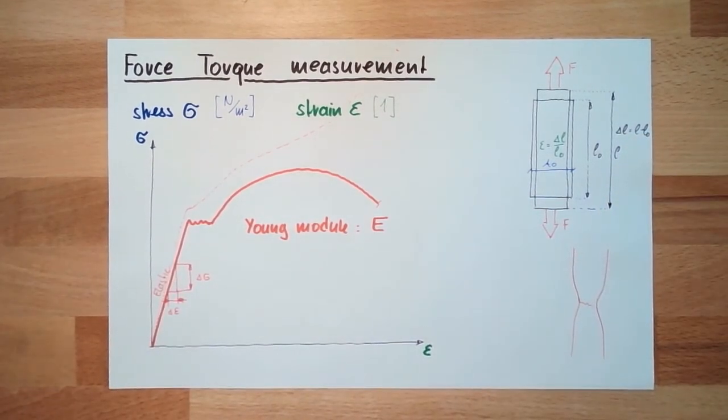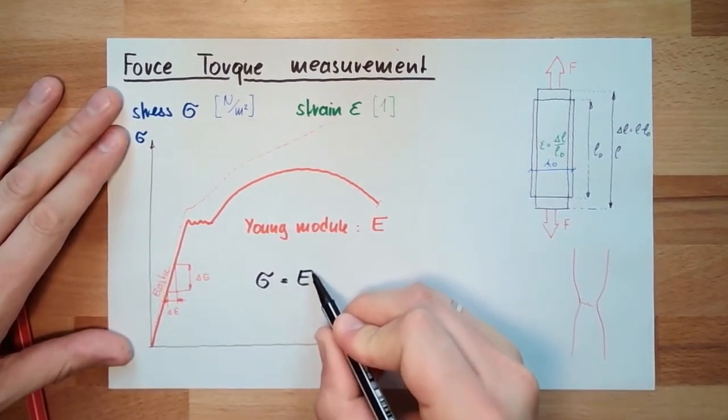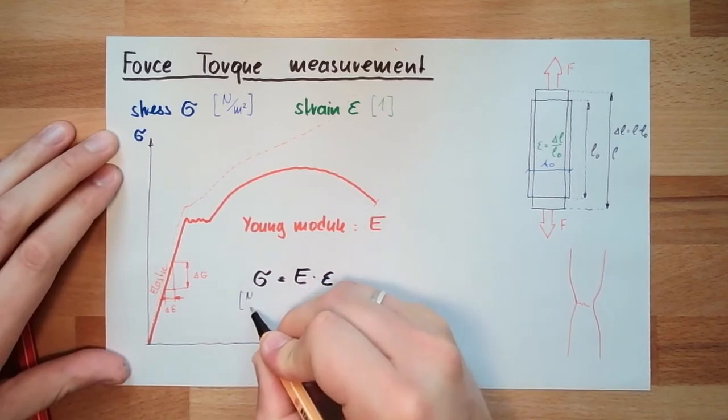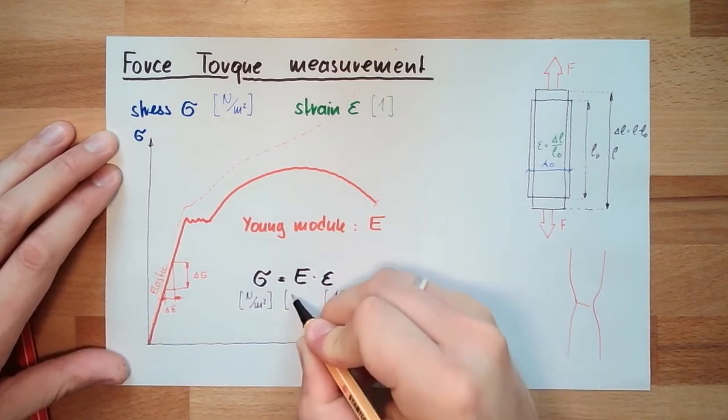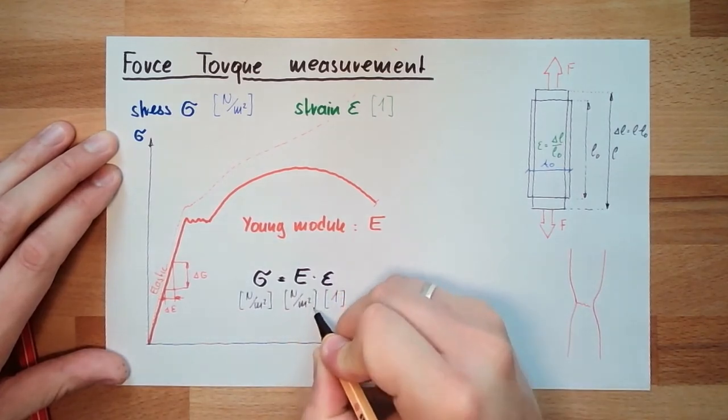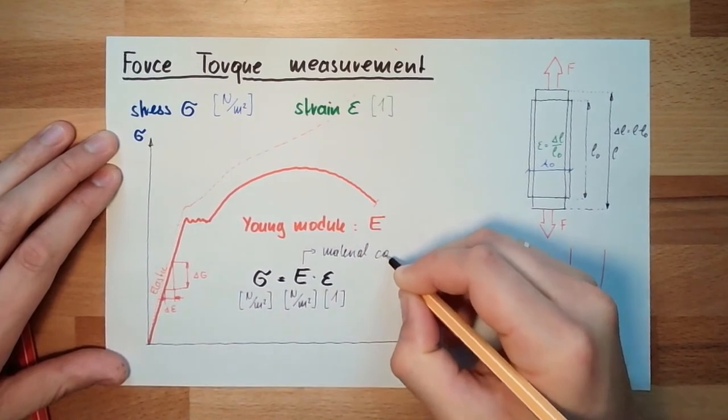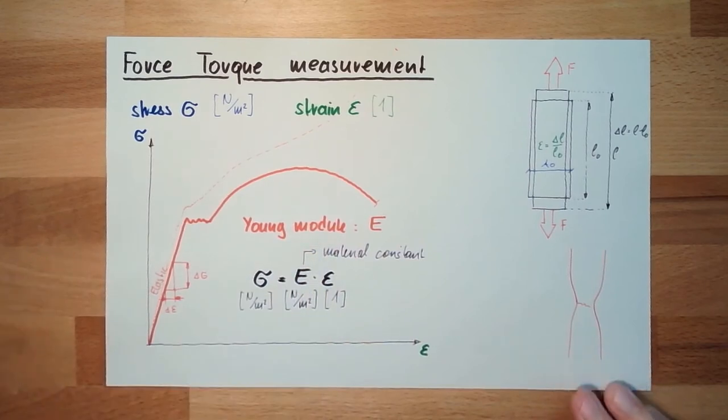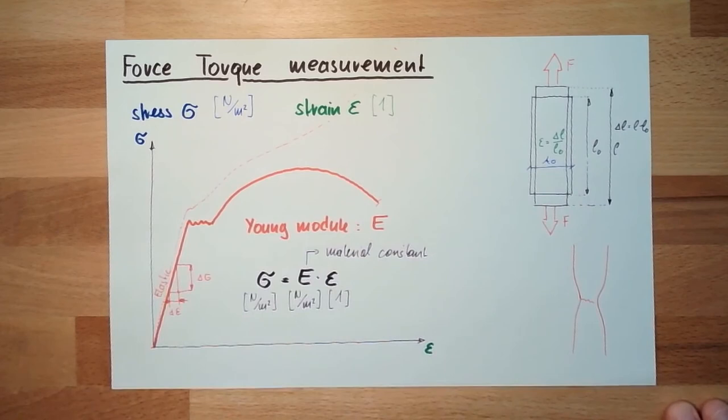This is describing the steepness of this elastic area here. So let's simply write it down. Sigma, the stress, is E multiplied by the strain. This unit here is Newton per square meter. This unit here is 1. So this unit here is Newton per square meter. And this is a typical material constant. Depending on the material, we have a typical E. 200,000 for steel, plain steel.